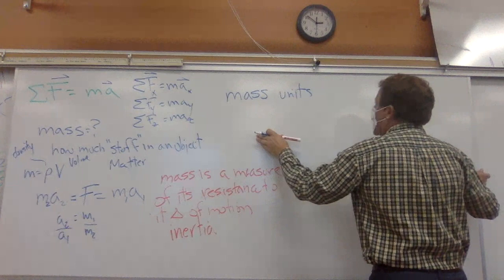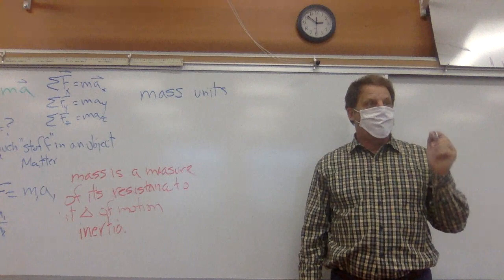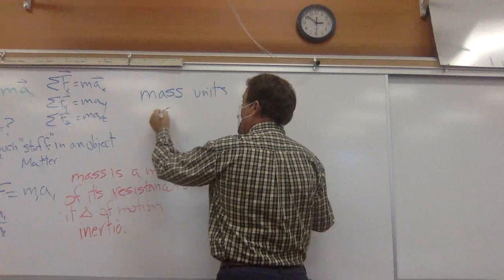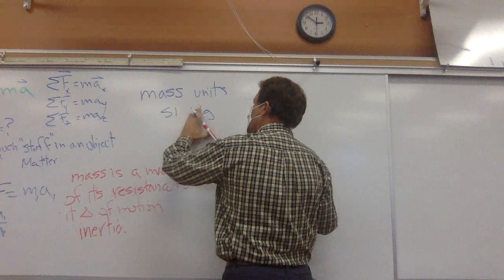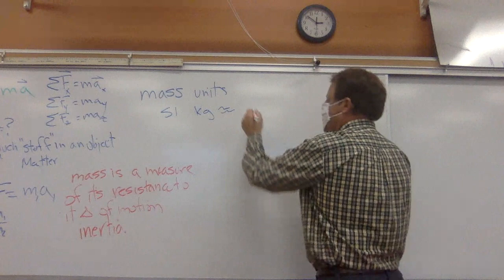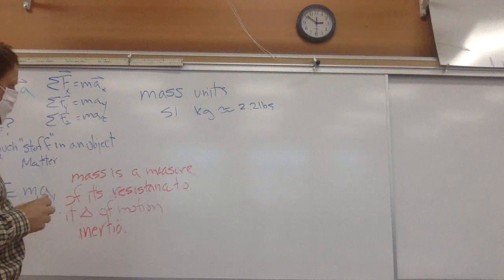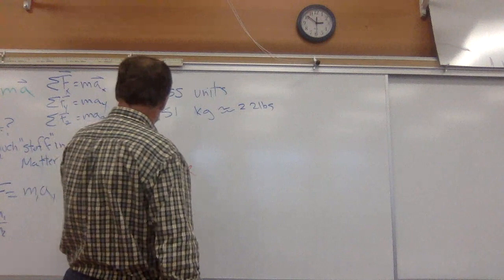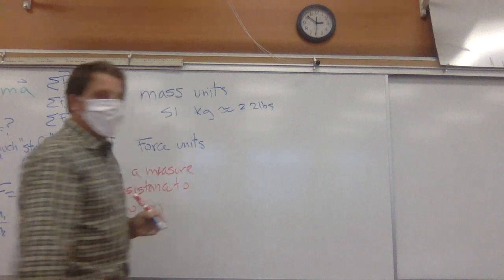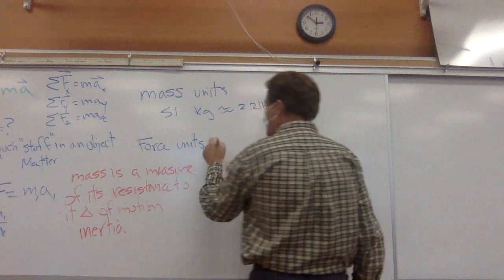Mass units: what are the units for mass? Kilograms. In the SI system, it's going to be kilograms, which is about 2.2 pounds. What are force units?